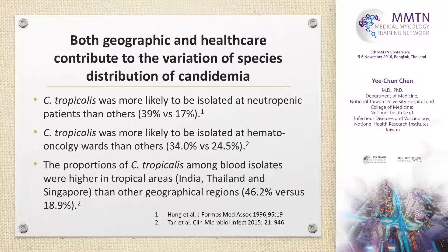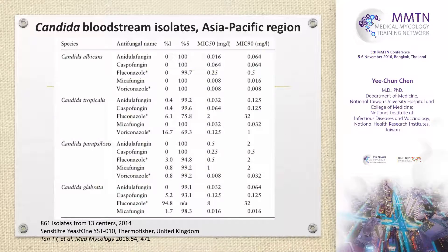Why are we concerned? Previous studies showed that Candida tropicalis is more likely isolated from neutropenic patients. Our study showed that Candida tropicalis is more likely to be isolated from hematology wards as well as in tropical countries. Looking at this very large-scale, recently published MIC data for Candida isolates from the Asia-Pacific region — you can see albicans, tropicalis, parapsilosis. We are all familiar with Candida glabrata regarding fluconazole resistance or non-susceptibility, but please take a close look at Candida tropicalis.